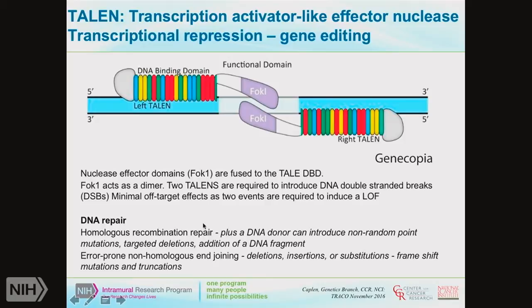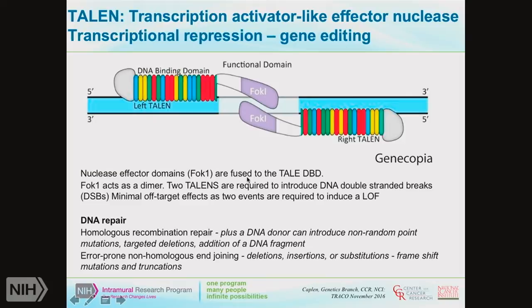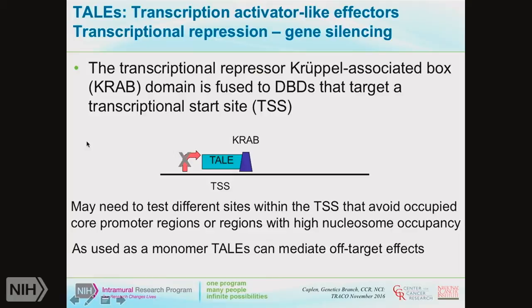There are alternative ways of doing this where you use the TALEN to bring a domain into context with the transcriptional start site to block transcription — TALEN-based silencing. This can be reversible but rarely is. The biggest problem is you need to test many sites within the transcriptional start site to ensure effective silencing. If there's high nucleosome occupancy, the TALEN won't be able to bind. If you use them as a monomer, you'll get many off-target effects because they can bind in many different places.